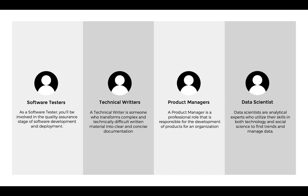The third additional role is the product manager. A product manager is a professional responsible for the development of products for an organization. They manage the entire process of a product, ensuring that engineers, developers, designers, and everyone else is doing what they should be doing at the right time and delivering according to the timeline. The last role is the data scientist — data scientists are analytical experts who utilize skills in both technology and social science to find trends and manage data, essentially running through large datasets to produce reports that can predict the future.